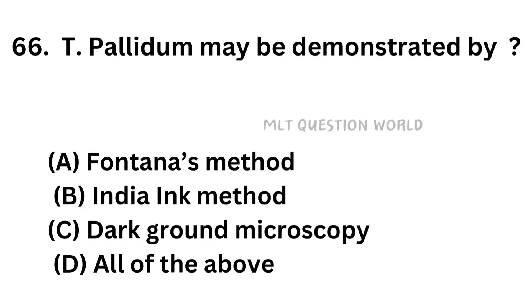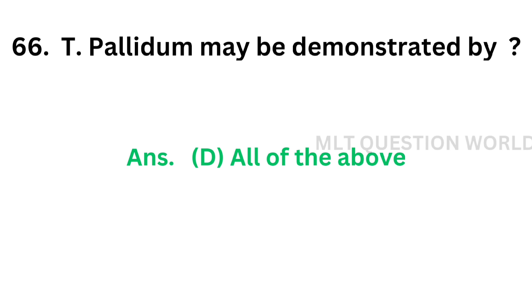Treponema pallidum may be demonstrated by: Option A: Fontana's method. Option B: India ink method. Option C: Dark ground microscopy. Option D: All of the above. The correct answer is Option D, all of the above. Treponema pallidum can be demonstrated by dark field microscopy, India ink preparation, and Fontana's method.